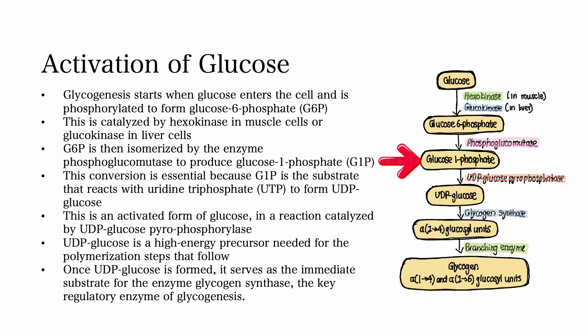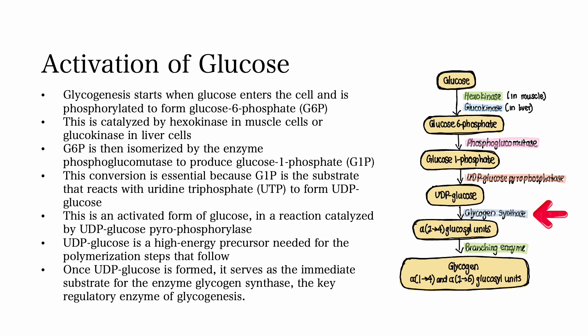This conversion is essential because G1P is a substrate that reacts with uridine triphosphate, also called UTP, to form uridine diphosphate glucose, abbreviated as UDP-glucose. UDP-glucose is a high-energy precursor necessary for the polymerization step that follows. Once UDP-glucose is formed, it serves as the immediate substrate for the enzyme glycogen synthase, which is a key regulatory enzyme of glycogenesis.